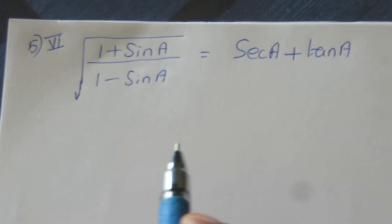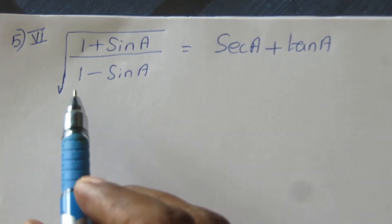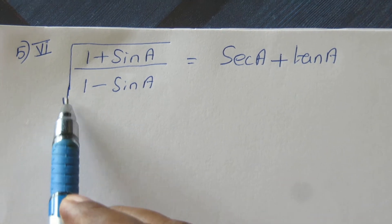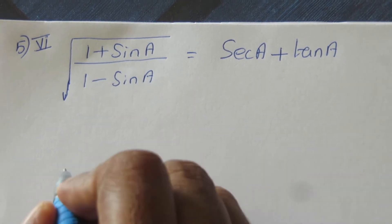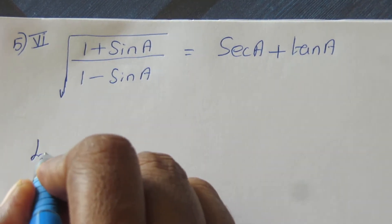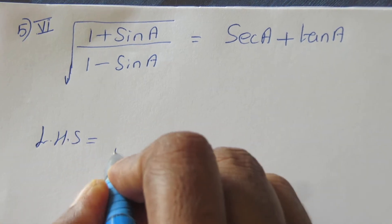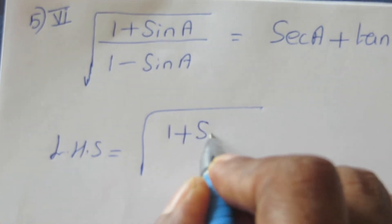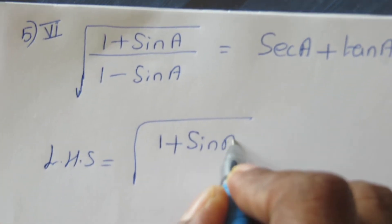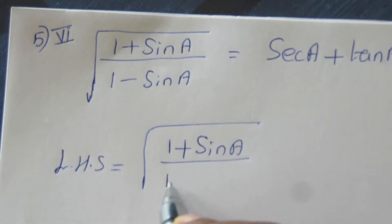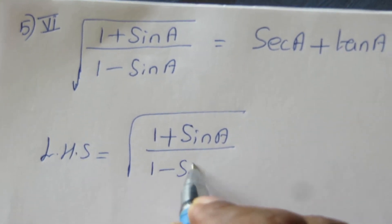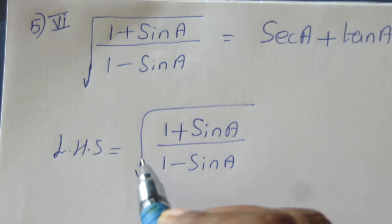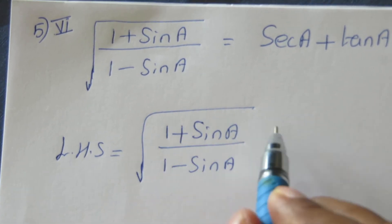Hello student, let us solve this question. First let us solve the left hand side. Left hand side equals square root of 1 plus sin A by 1 minus sin A. To eliminate the square root, we multiply by the rationalizing denominator.